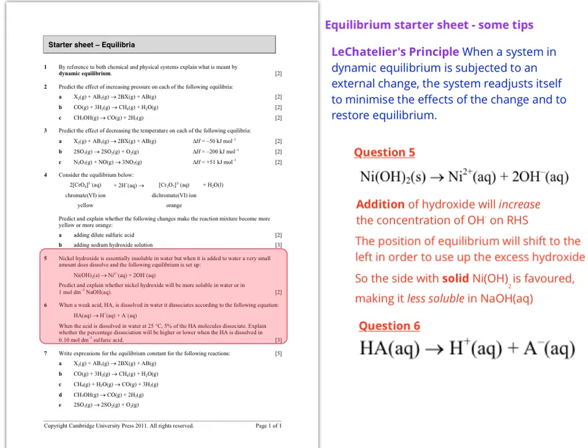Looking at question 6 it gives you the dissociation of a weak acid and it says to explain whether the percentage of dissociation will be higher or lower when the HA is dissolved in sulfuric acid. The first thing to say is that dissolving the HA in H2SO4 will increase the hydrogen ion concentration.